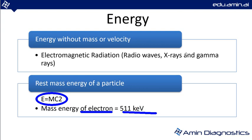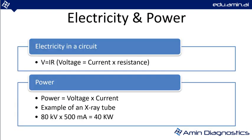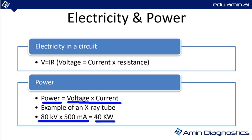For a quick review of electricity and power: voltage in a circuit equals current times resistance (V = IR), and power equals voltage times current (P = VI). The relationship P = VI is particularly important. This completes our first module and we will be moving to the next.